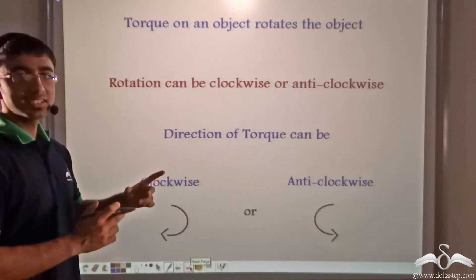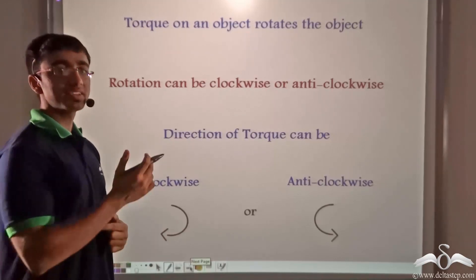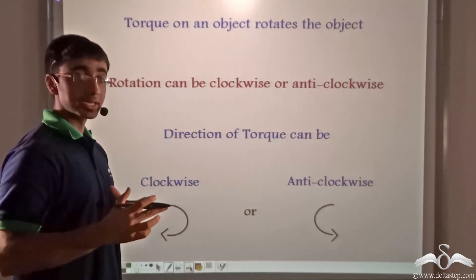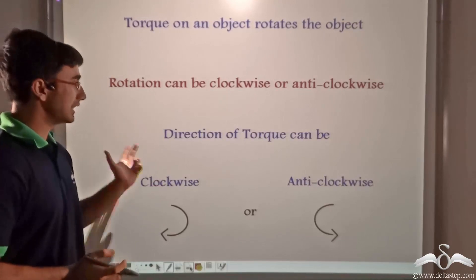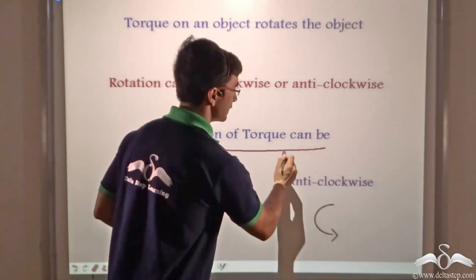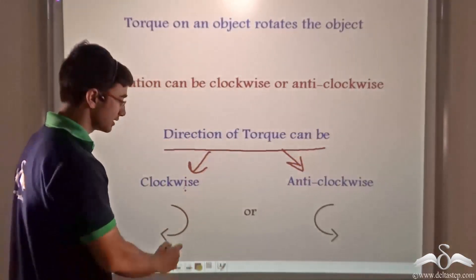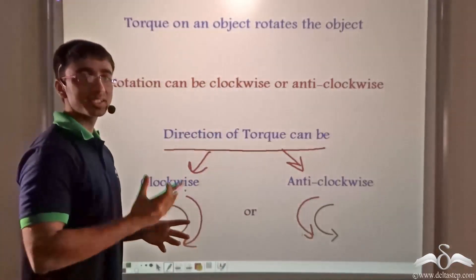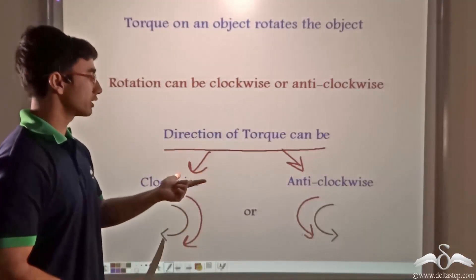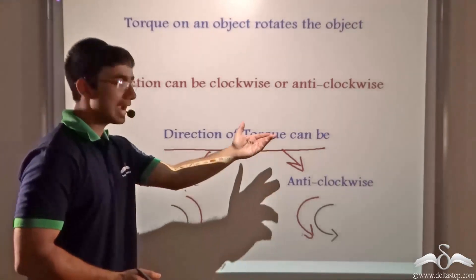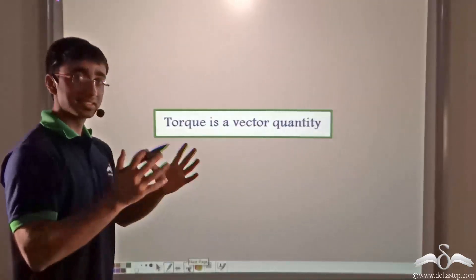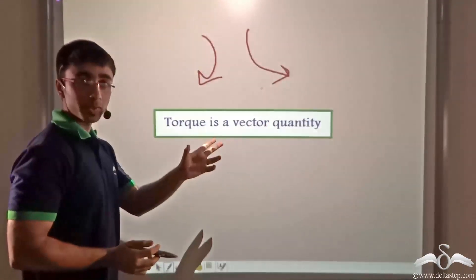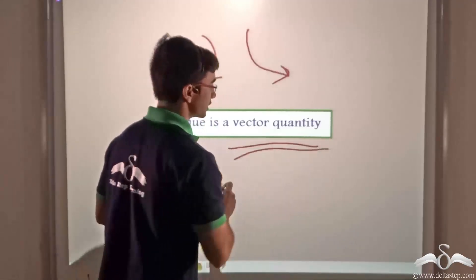Torque in an object is responsible for rotating the object. Rotation can occur in two ways: it can either be clockwise or anti-clockwise. So the direction of torque can be classified as either clockwise or anti-clockwise. Depending on the direction in which the body is rotating, we classify torque as a clockwise torque or an anti-clockwise torque. Since there is a direction associated with torque, torque is a vector quantity.